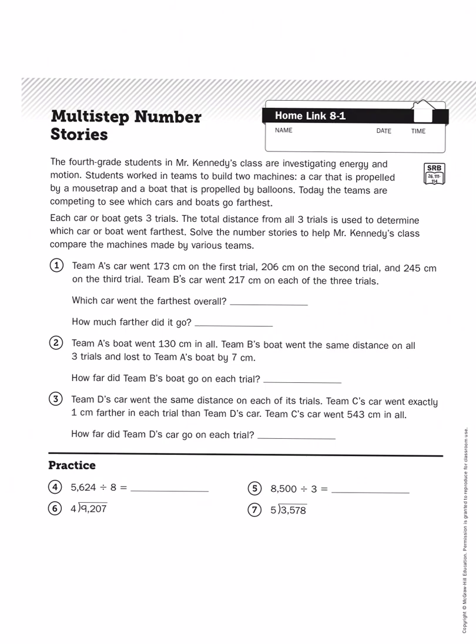The explanation to the story problems gives us some information we might want to circle. Each car or boat gets three trials. The total distance is used to determine which boat went the farthest. We are looking at three distance trials. Let's look at problem number one.